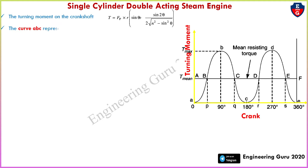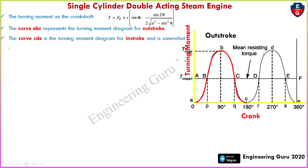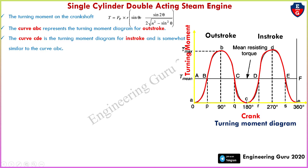The curve represents the turning moment diagram for the out stroke. In this diagram of the single cylinder double acting steam engine, we can see the curve A-B-C, which is called the out stroke, and the curve C-D-E, which is called the in stroke. This line is called the T-mean line, or mean resistance torque line. Points B and D are maximum torque, and here is the minimum torque.